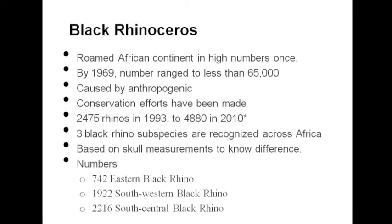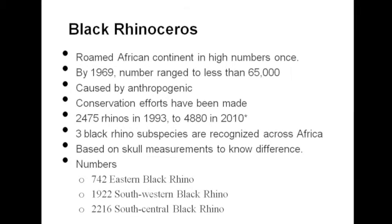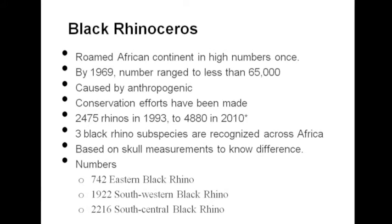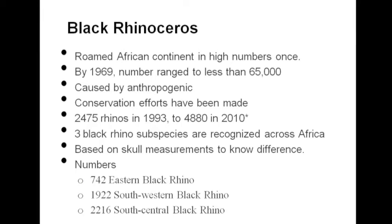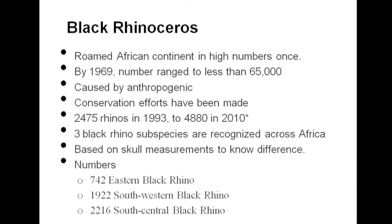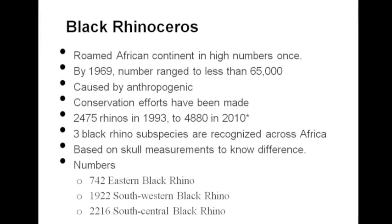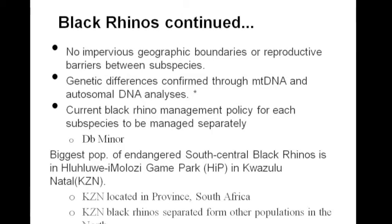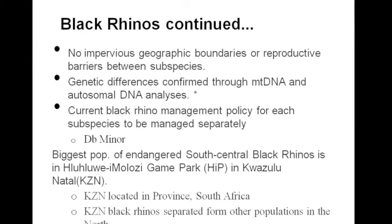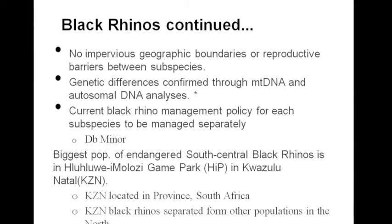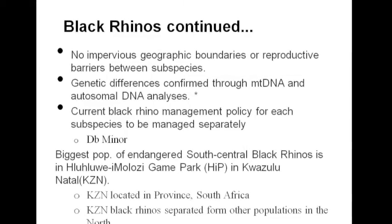There are three recognized subspecies of black rhinos across Africa, differentiated based on skull measurements. The first is the eastern black rhino, also called Diceros bicornis michaeli, with around 742 individuals. The second is the southwestern black rhino, D. b. bicornis, with around 1,922. The third, which we focus on most, is the south central black rhino, D. b. minor, with 2,216. These subspecies occupy different areas with distinct habitats and climates.